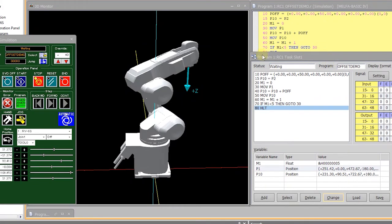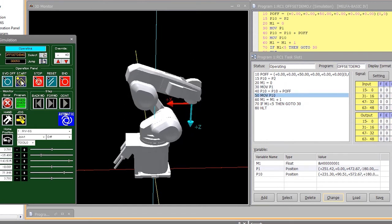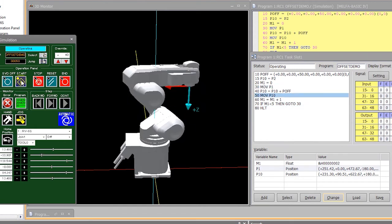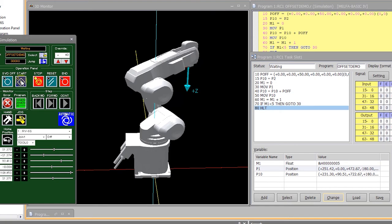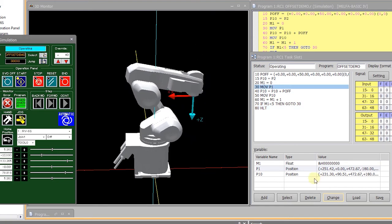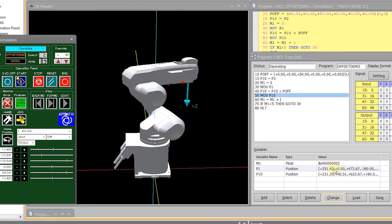So I've gone ahead and opened up a program in RT Toolbox 3. And the program that you are currently looking at is set up where I have a defined amount of offset that I want to apply. And as the program runs, it continually adds the offset amount to position P10 so that the robot incrementally moves up with each iteration.